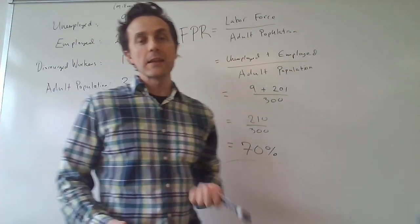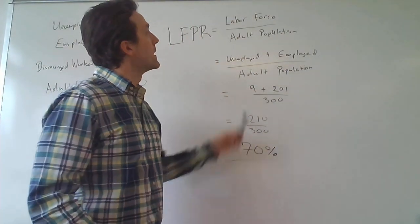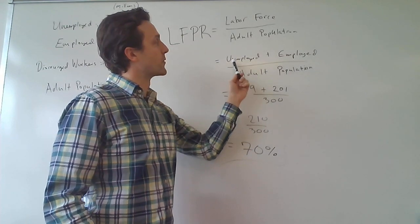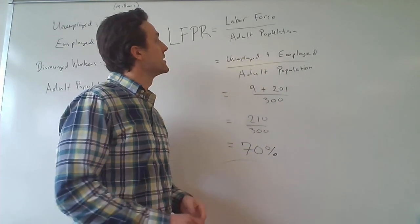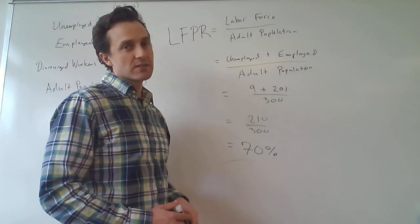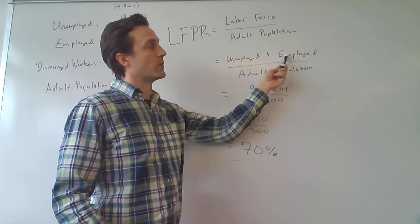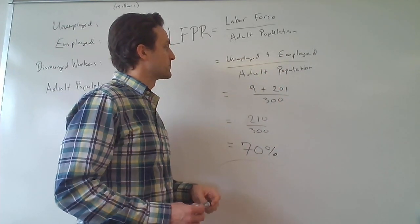We're not given the labor force explicitly in this data, but we could figure it out because we know that the size of the labor force is equal to the number of people who are unemployed plus the number of people who are employed. So we can write that the labor force participation rate equals the number of people who are unemployed plus the number of people employed as a ratio of the entire adult population.